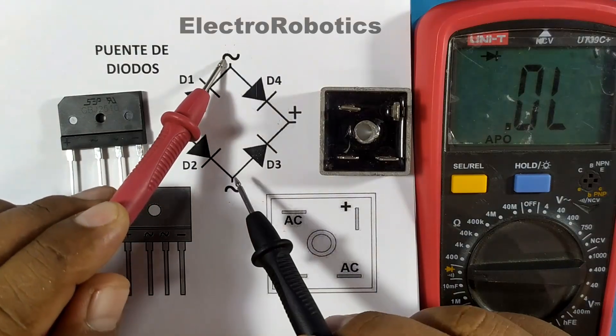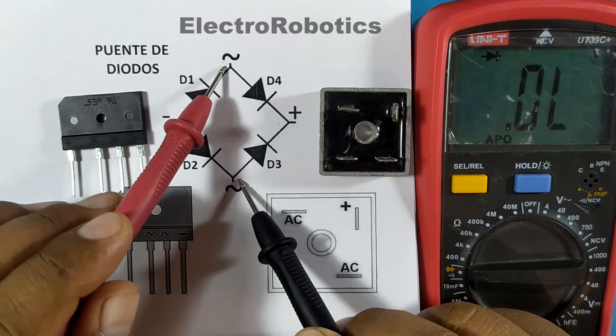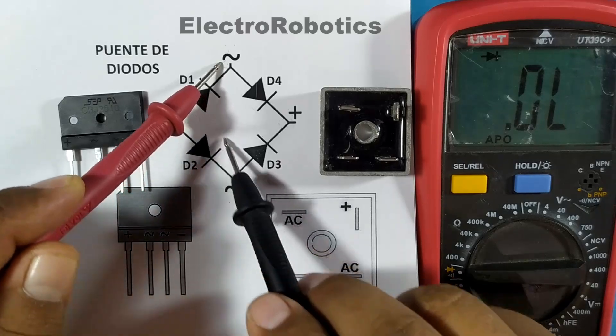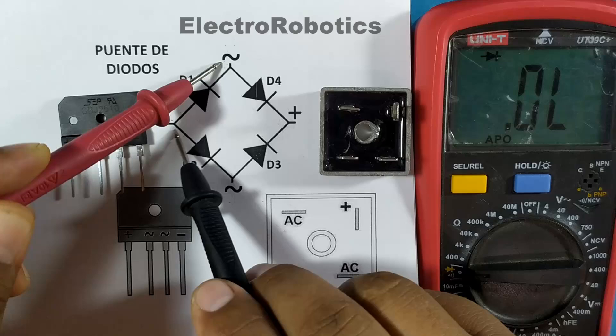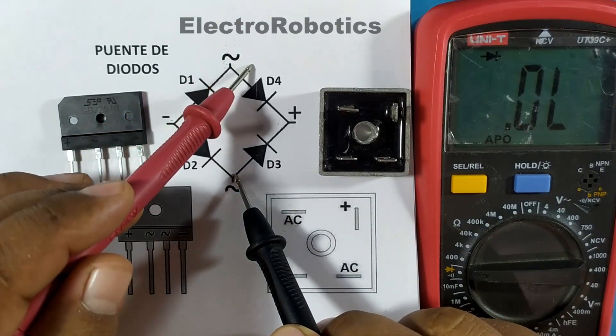We put positive on top and negative on the bottom. Which of these diodes works? With positive on top, D4 works. With negative on the bottom, D2 works. Therefore, the current will pass through D2 towards negative and positive will pass through D4 towards positive.